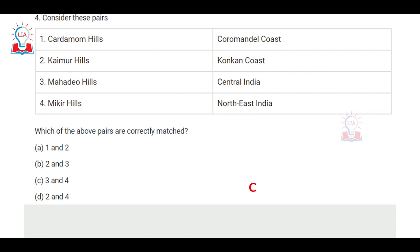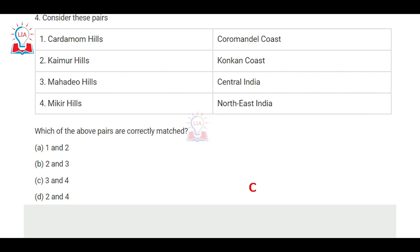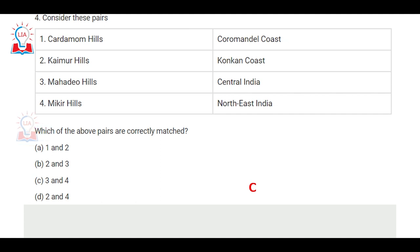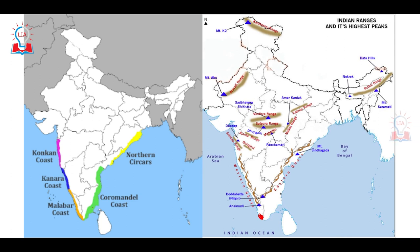The next question is a match-the-following based on Indian mapping, asking which hills are paired correctly with their adjacent coast. The options are: Cardamom Hills–Coromandel Coast, Kamur Hills–Konkan Coast, Mahadei Hills–Central India, and Mikir Hills–Northeast India. Cardamom Hills is the southernmost part of the Western Ghats, situated in the southernmost part of Kerala. Looking at the map, the Coromandel Coast is the eastern coast of India. So Cardamom Hills is part of the Malabar Coast, not the Coromandel Coast — the first pair is incorrect.